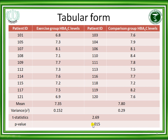The null hypothesis is rejected because 2.69 falls in the rejected region, and the P-value is 0.015, which is less than 0.05. Since the P-value is less than the alpha level of 0.05, this indicates a statistically significant difference. The interpretation is that exercise significantly reduces the HbA1c level compared to those patients who do not exercise.